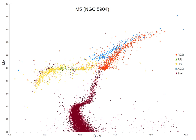Horizontal branch stars were discovered with the first deep photographic photometric studies of globular clusters, and were notable for being absent from all open clusters that had been studied up to that time. The horizontal branch is so named because in low-metallicity star collections like globular clusters, HB stars lie along a roughly horizontal line in a Hertzsprung-Russell diagram.